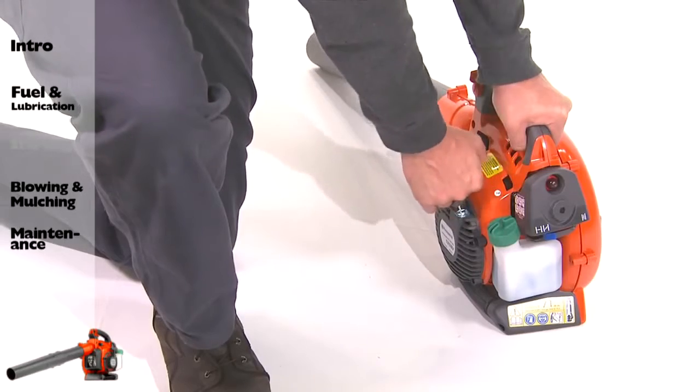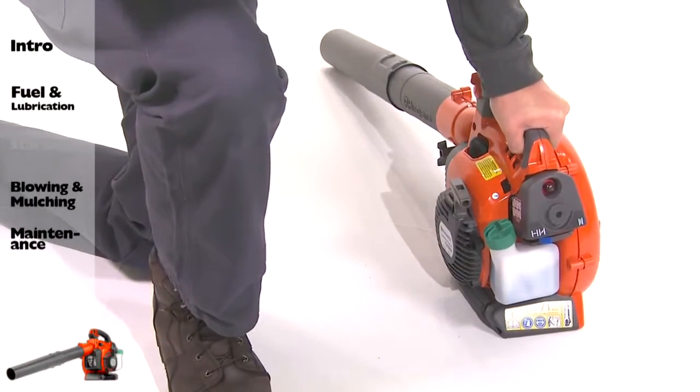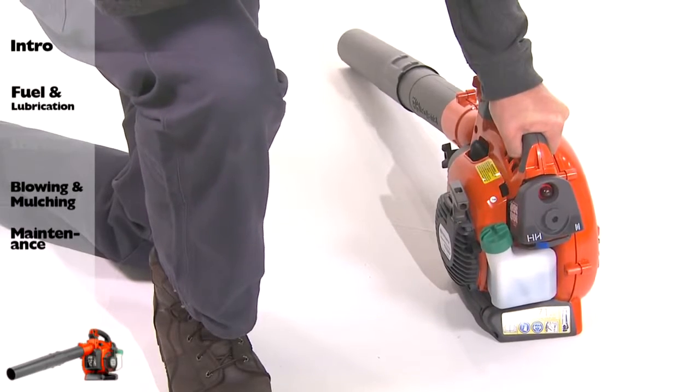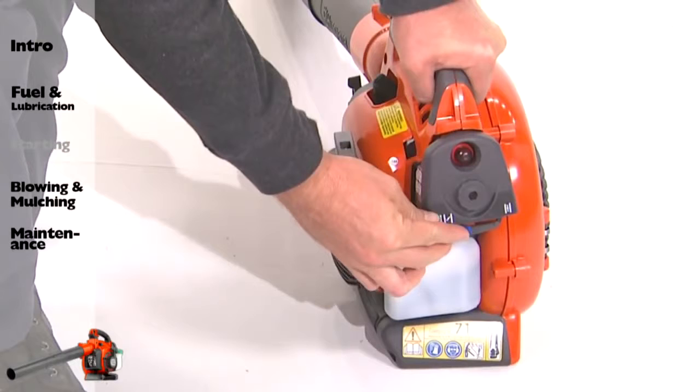Move the choke to the half position and pull the cord until the engine starts and runs. Allow the engine to warm up for approximately 10 seconds, then move the choke to the off-choke position.